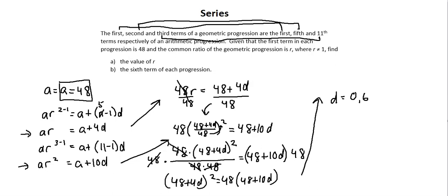And now with two values for d, I'll be able to calculate two values for r. Notice in requirement a, the value, singular, of r. So there's a clue for me. Let's see what happens when I calculate my two r values. The way I'm going to calculate r, r equals, looking at the top of the center column, r equals 48 plus 4d over 48.